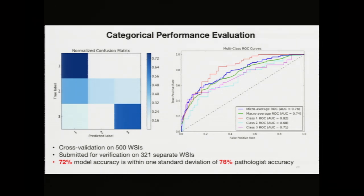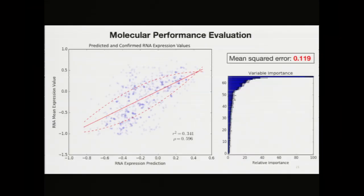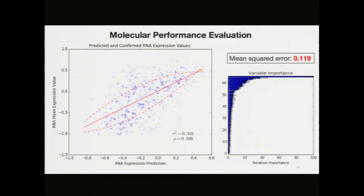Furthermore, my model's accuracy of 72% is within one standard deviation of current pathologist accuracies of 76%, providing it with significant potential to be used in clinical settings. For molecular performance prediction, I obtained a correlation coefficient of approximately 0.76 between the categorical and molecular expression values, with an R value of 0.596, indicating my model's profound predictive potential. This represents state-of-the-art and indicates my model's ability to identify biological attributes from histology slides that are normally obtained from blood samples — the first in the field to ever perform such a task.